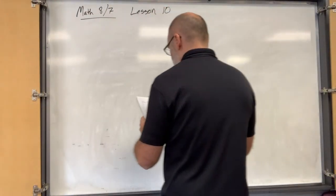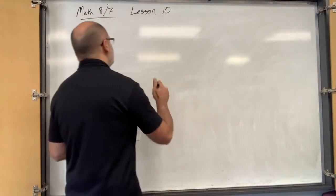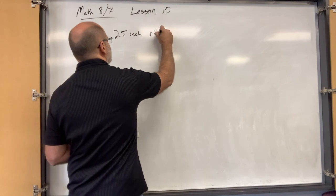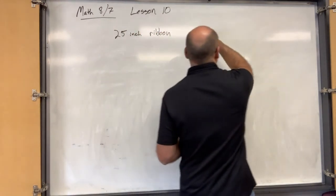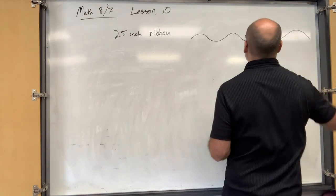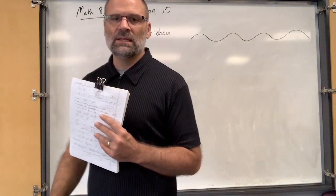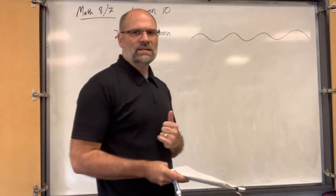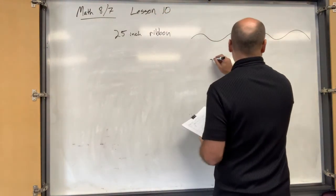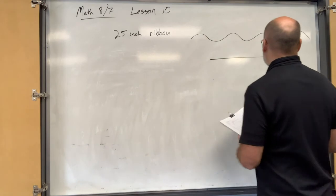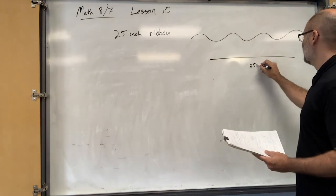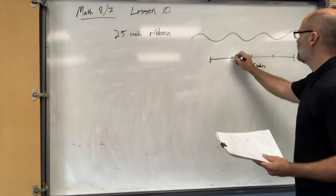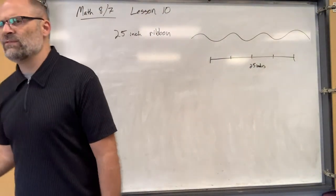Lesson 10 — let's say there's a 25-inch ribbon. Can you picture the 25-inch ribbon? So here's what I want to do: I want to cut it into four equal parts. How much is going to be in each part? If I cut 25 inches into four equal parts, what is one of those parts going to look like and how do you figure that out?